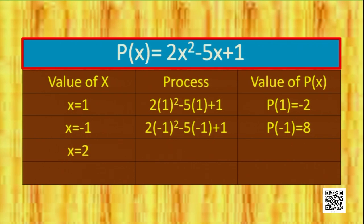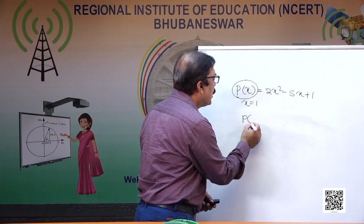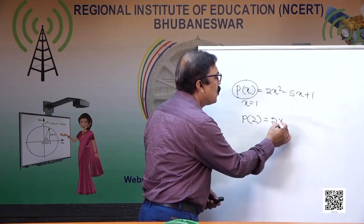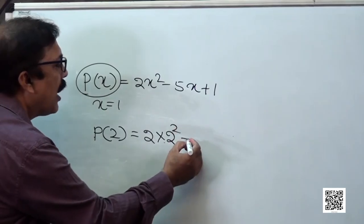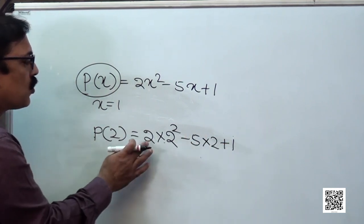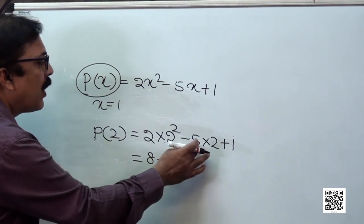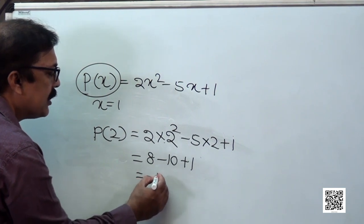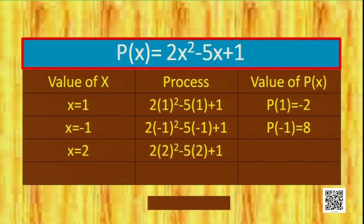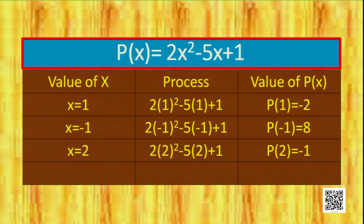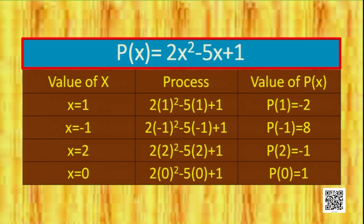For x = 2, the polynomial is written as P(2): 2(2)² − 5(2) + 1 = 8 − 10 + 1 = −1. So the value of the polynomial for x = 2 is −1. Similarly, for x = 0: 2(0)² − 5(0) + 1 = 0 − 0 + 1 = 1, so P(0) = 1. In all these cases, we can find the value of the polynomial for different values of x.